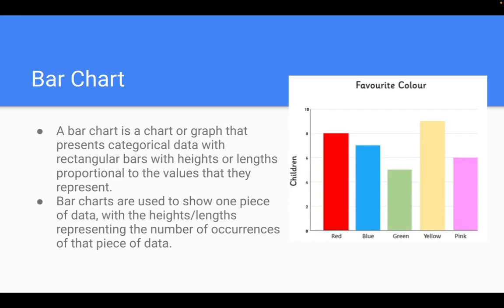Alright, so bar graphs or bar charts. These are simply a chart or graph that presents categorical data on rectangular bars and heights proportional to the values of which they represent. So notice you have a y-axis and an x-axis. You can look at how high the y goes to actually count for the value of how many instances of red being the favorite color from a data set. So bar charts are used to show one piece of data with the height and length representing the number of occurrences of a piece of data.